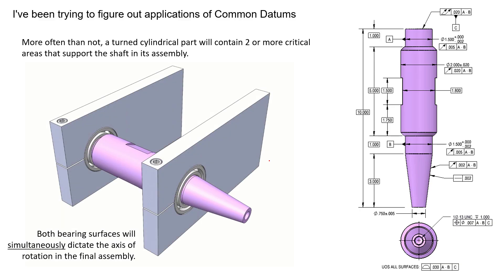If you take a look at this part in its final assembly, more than likely it's got multiple bearing surfaces or multiple bearings on multiple features creating a single axis of rotation. So as you can see here, both bearing surfaces will simultaneously dictate the axis of rotation for this part in the final assembly. Not one axis from either of those cylinders is going to dictate the location or orientation of everything else in the final assembly.